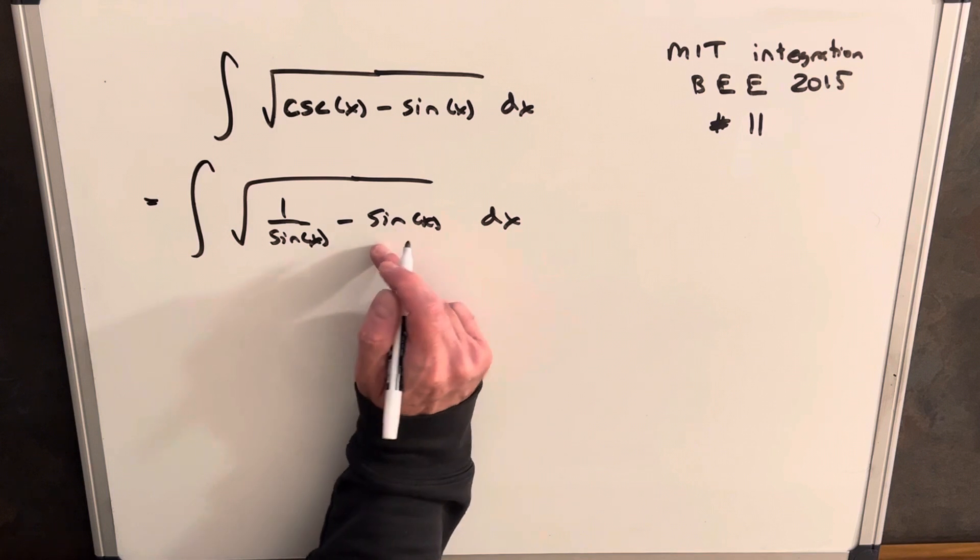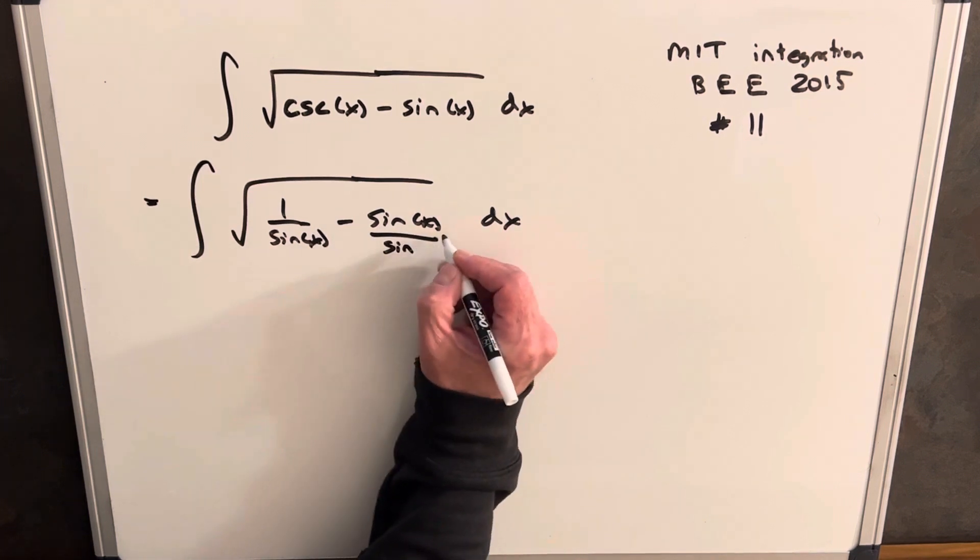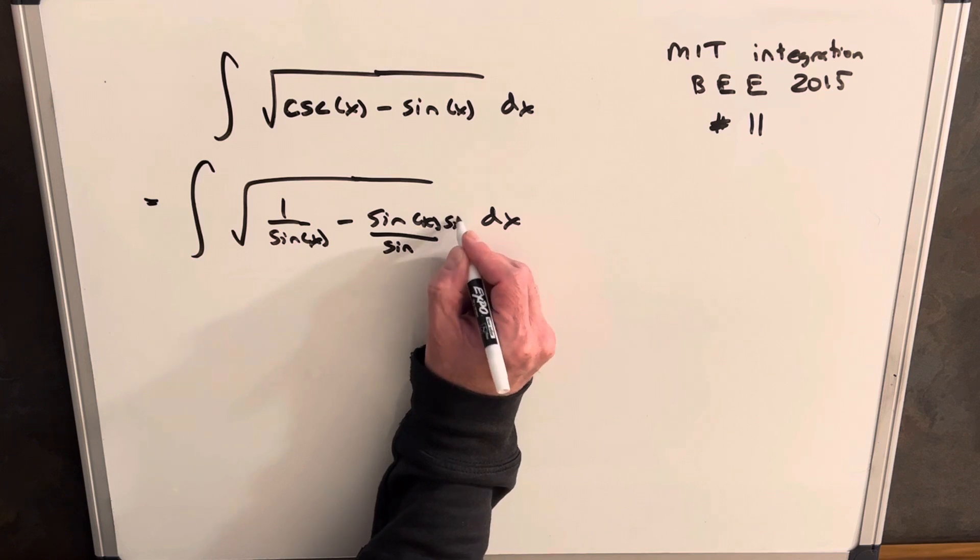So then I'm wondering if I just get a common denominator, maybe I can put these two together. So we'll multiply top and bottom here by sine x.